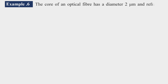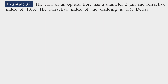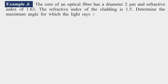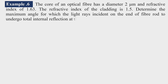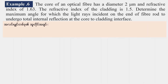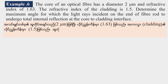Example 6: The core of an optical fiber has a diameter of 2 micrometers and a refractive index of 1.63. The refractive index of the cladding is 1.5. Determine the maximum angle for which light rays incident on the end of the fiber undergo total internal reflection at the core-to-cladding interface.